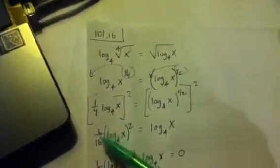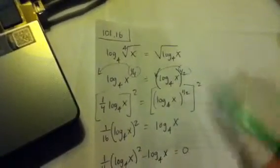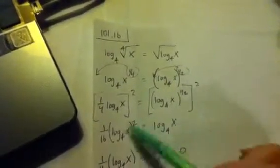So squaring the left hand side gives me one sixteenth, and then this whole thing is squared. And then I was like, how are we ever going to get out of this?